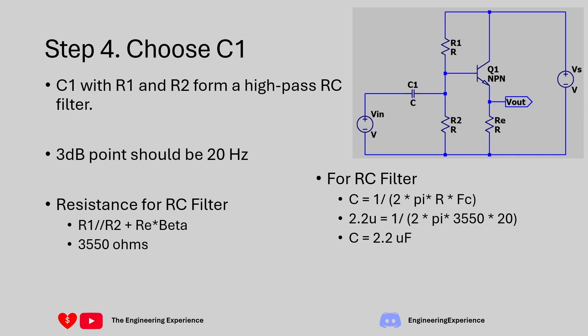Plugging that into our RC filter equation, which is C equals 1 over 2 pi R F C, we get a capacitance value of 2.2 microfarads for a cutoff frequency of 20 hertz. You can see over here that this filter is going to cut off any frequencies below 20 hertz.